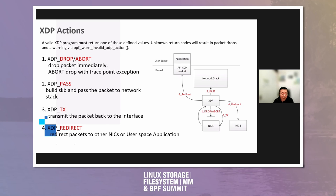Now, XDP actions are shown on the right picture. All valid XDP programs must return one of these defined values. Unknown return codes result in packet drops and a warning via the BPF verifier. XDP_DROP drops packets immediately. XDP_ABORTED drops with a trace point exception. XDP_PASS builds and passes the packet to the network stack. XDP_TX transmits the packet back to the interface. XDP_REDIRECT redirects packets to other NICs or user space applications.